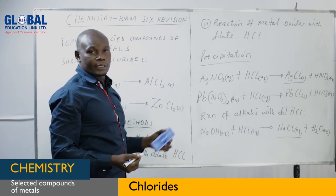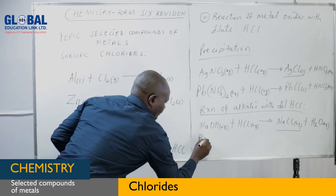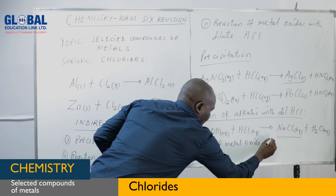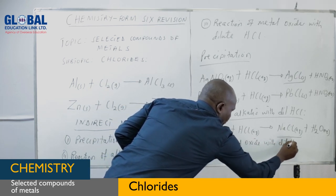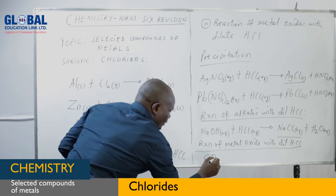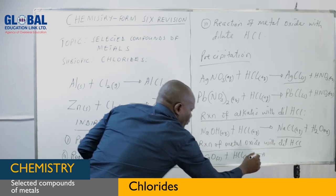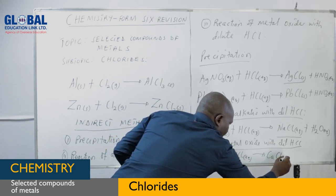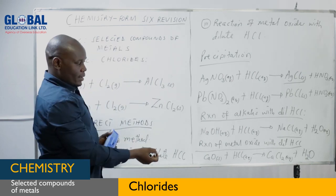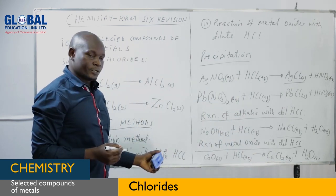The third method is the reaction of metal oxide with diluted hydrochloric acid. Taking an example of calcium oxide as our metal oxide — when calcium oxide is treated with diluted hydrochloric acid, our product will be calcium chloride plus water. This calcium chloride is our soluble chloride that has been formed.